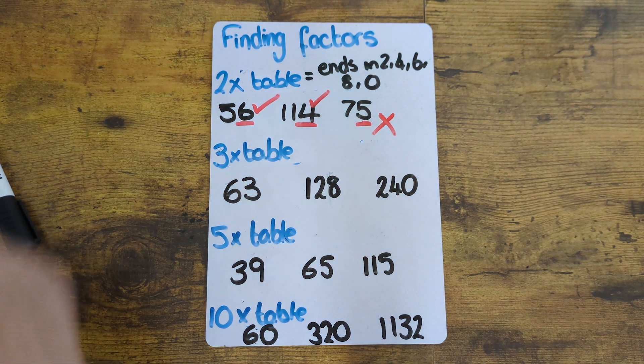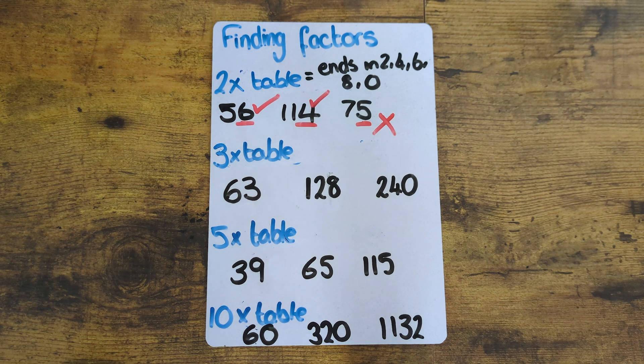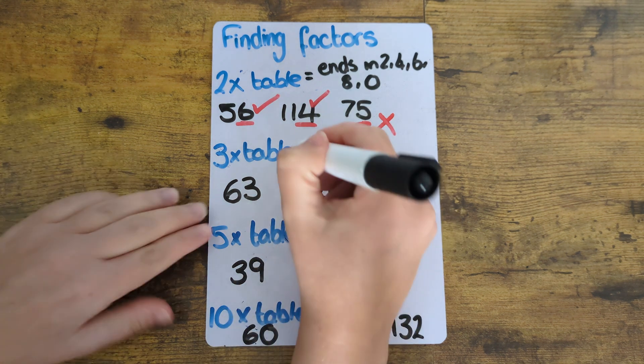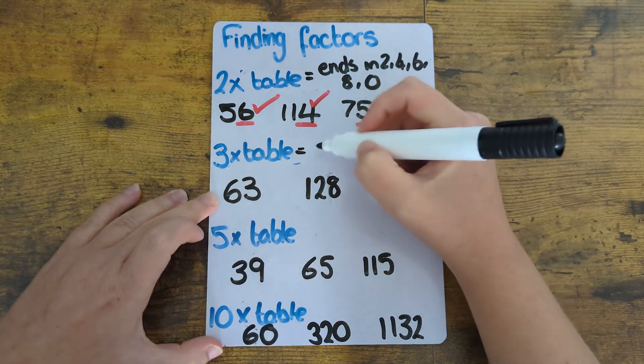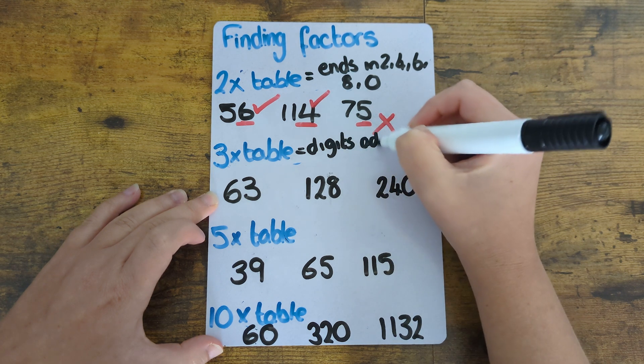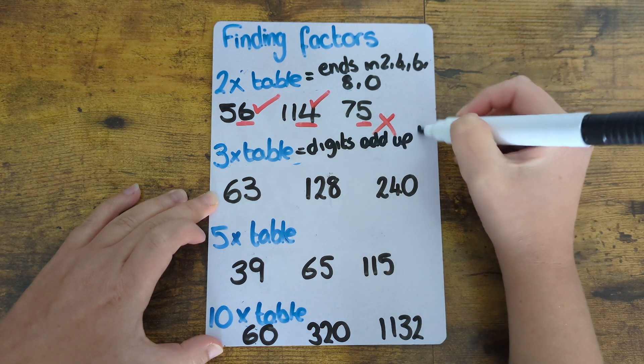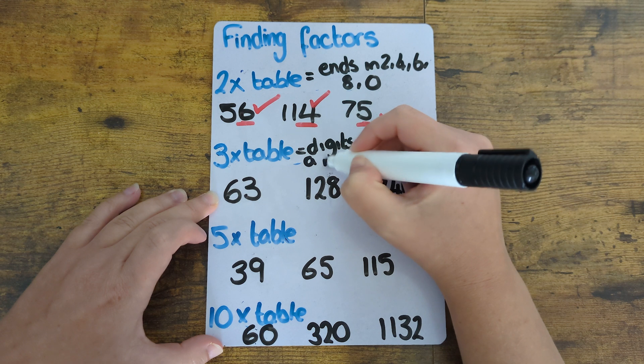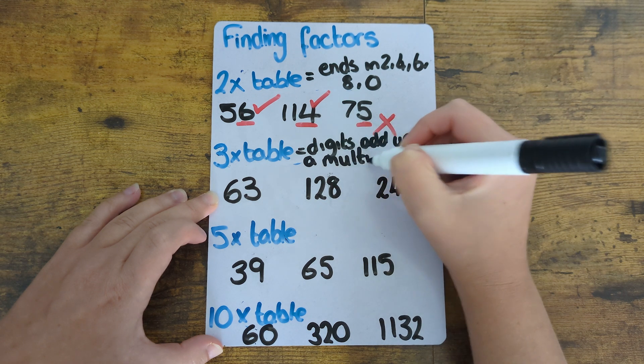Next one we're going to look at is the three times table and there's a special trick that you can use to determine this. So if all the digits in the number add up to a multiple of three that number will also be in the three times table and we'll go through these with each of these different numbers.